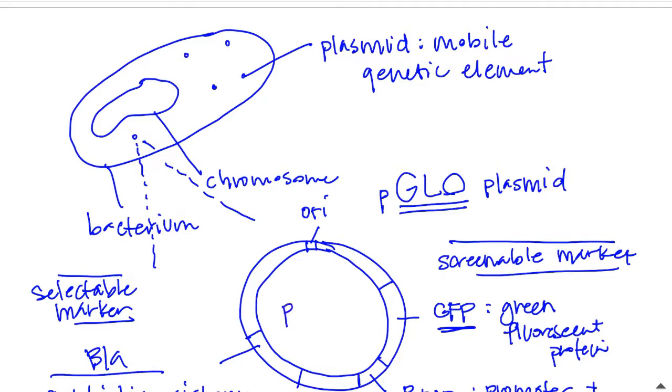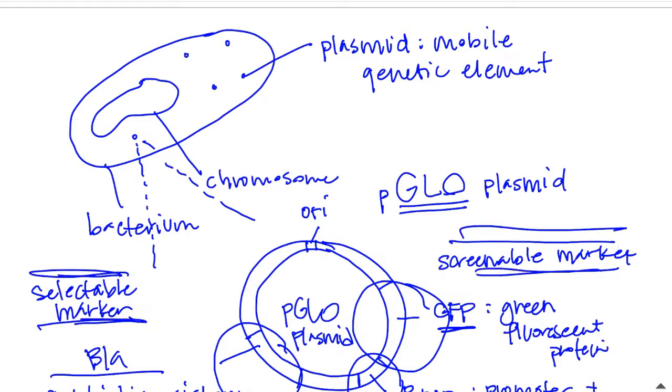Okay, so we've got this engineered plasmid, the P-glo plasmid that has DNA from lots of different sources. It has DNA from other bacteria cells here, a control mechanism from another bacteria cell, but then it also has DNA from a eukaryotic cell. So we've got a selectable marker and a screenable marker combined on an engineered plasmid. Okay, that's it. And I hope that was helpful.